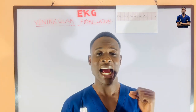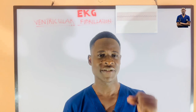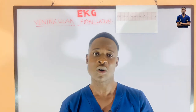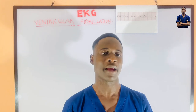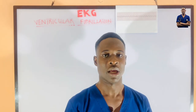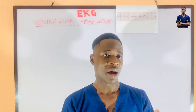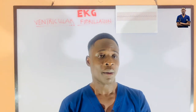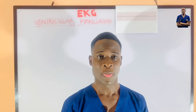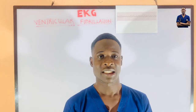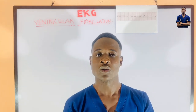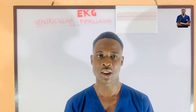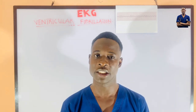V-Fib is an abnormal and disorganized ventricular contraction leading to a rapid increase in the cardiac frequency. This condition can be caused by various factors, including myocardial infarction and electrolyte imbalance — for example, low levels of potassium and low levels of magnesium can lead to this condition.